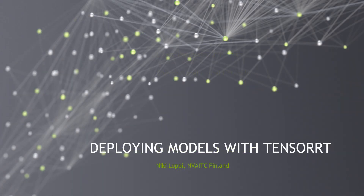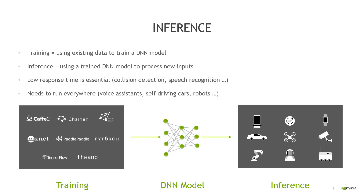Let's kick off with an introduction. At this stage we should all be familiar with the model training step where you use existing data to train a deep neural network model. With the term inference we mean the final step of deep learning where you use a trained model to process new inputs — in other words, you infer something from the data via your neural network.